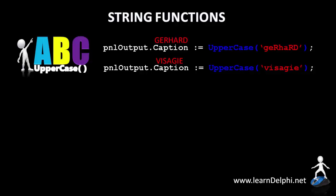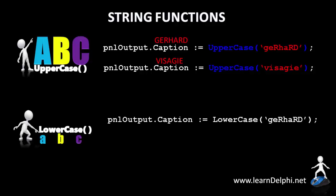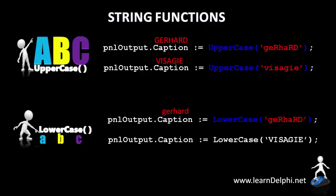The opposite of the UpperCase function is LowerCase. LowerCase changes the input string's characters to lowercase letters. This statement takes my name and passes it to the input parameter of the LowerCase function, returning the result in lowercase characters to the caption of a panel. And this statement takes my surname, which is in uppercase, and passes it to the LowerCase function, returning the result in lowercase characters to the caption of the panel.